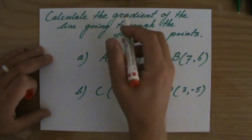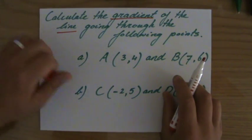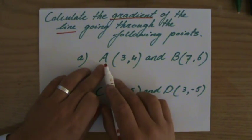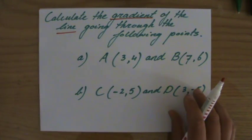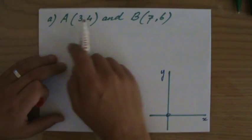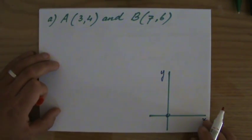So I have to calculate the gradient of a particular line. Now question A: point A at (3,4) and B at (7,6). Alright, so I prepared this slide which has the same question there at the top.